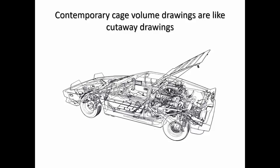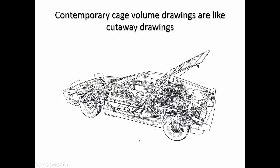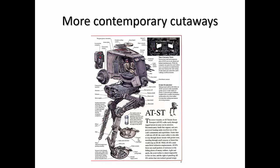A contemporary way of thinking about this are these cutaway drawings done in illustrations, where you can actually see through. The idea of Cage Volumes is to imagine the object being sort of transparent, where you can draw around it. Here's some more contemporary sort of cutaways, illustrations that have that.